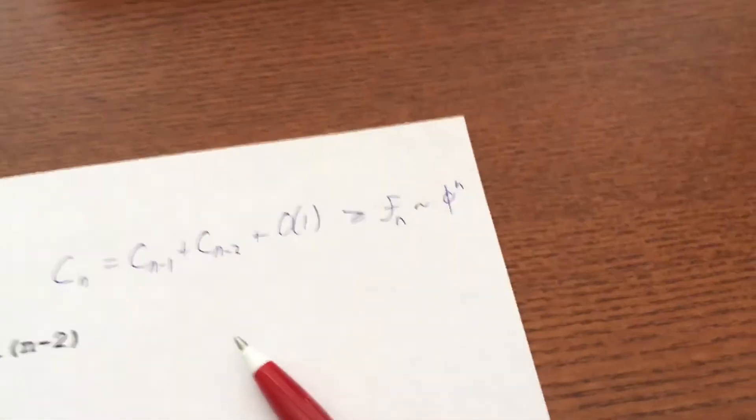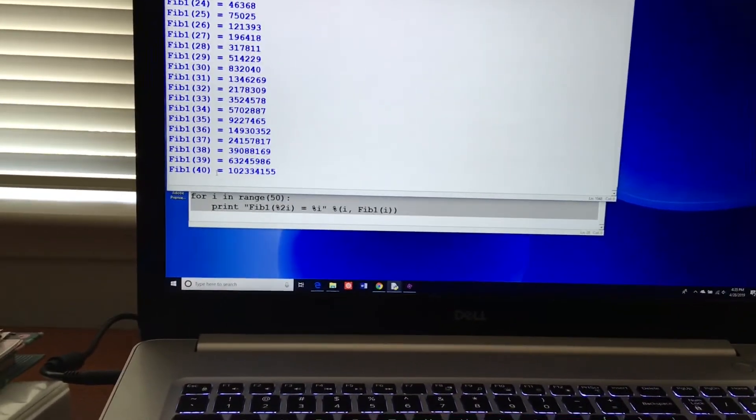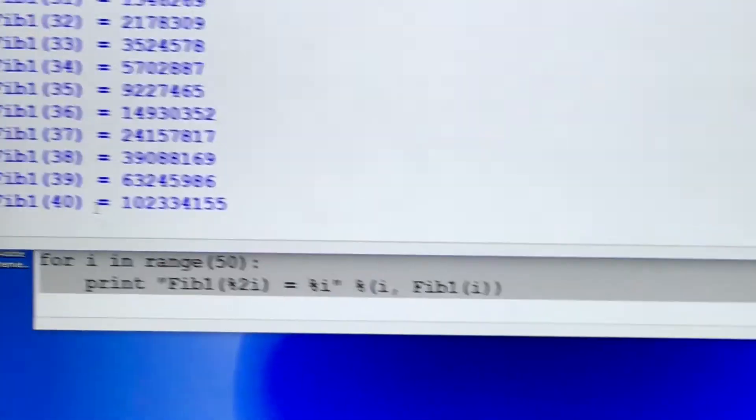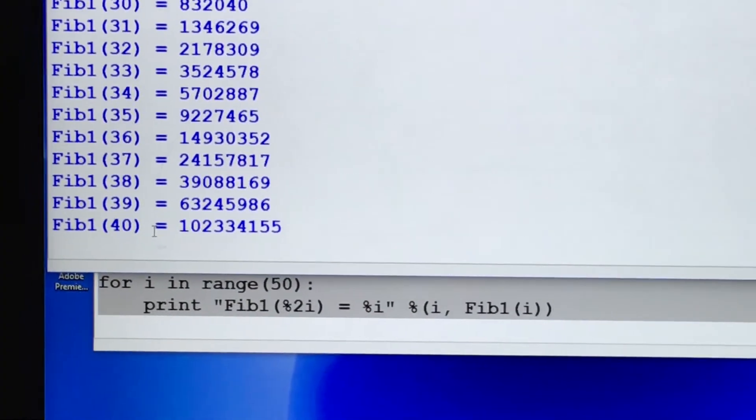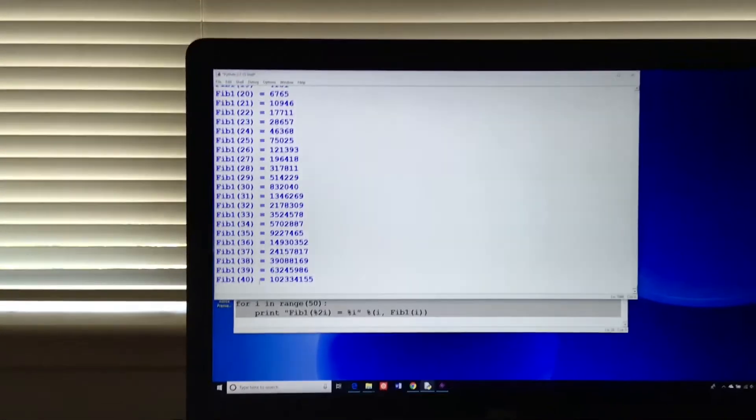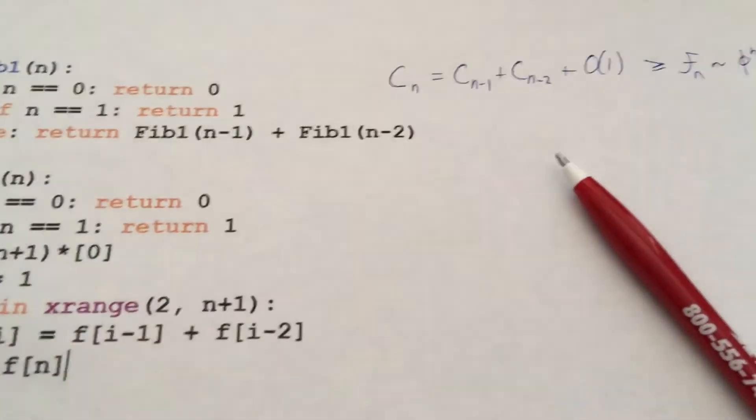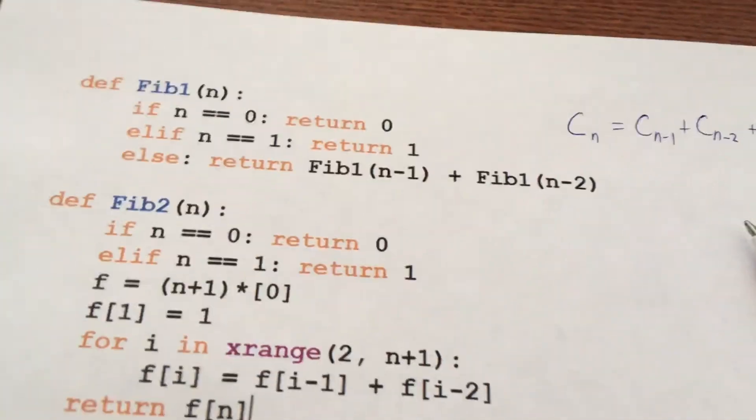So if we look back up at the computer, you can hear the fan on. It's only on Fib sub 40 and it's still working away and it's getting harder and harder. So it's exponentially hard. So that one is not very computationally efficient.